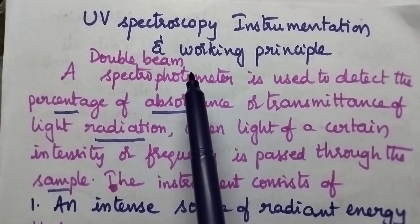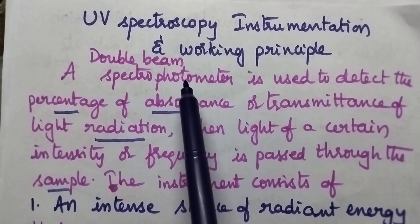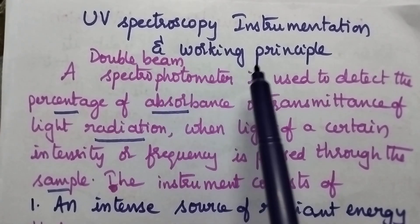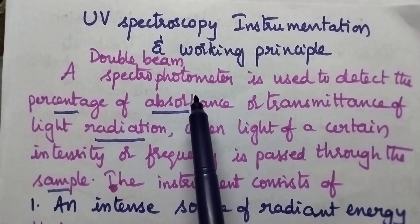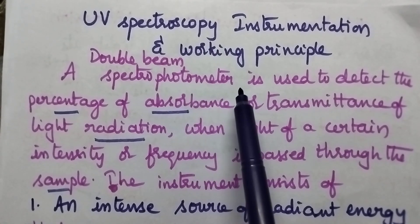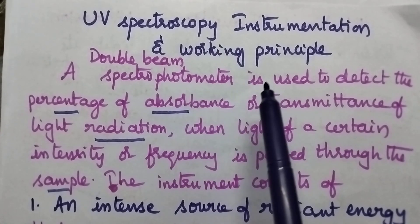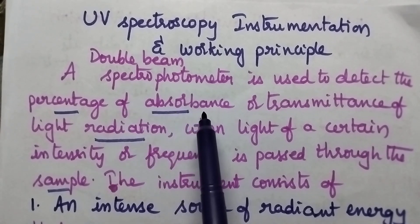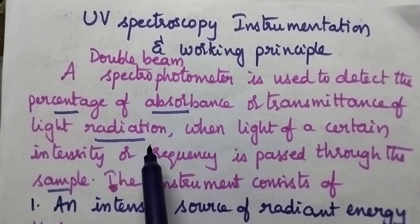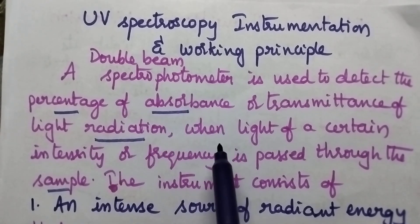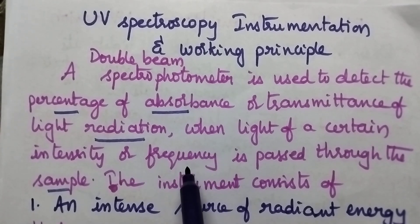In order to get the spectrum in the UV region, a double beam spectrophotometer is used. This double beam spectrophotometer is highly useful to detect the percentage of absorbance of the light radiation when the light radiation of desired frequency is passed through the sample solution.